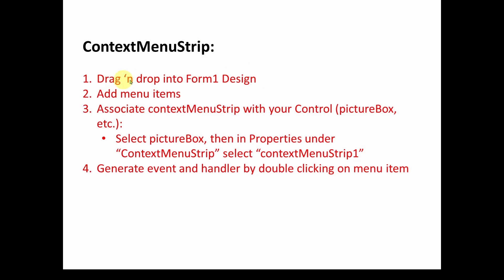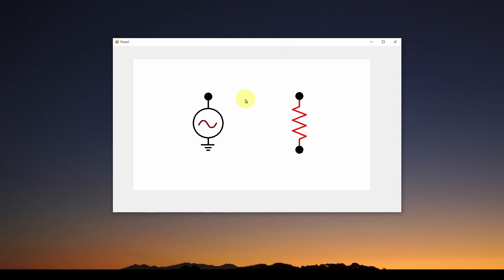The first thing is you drag and drop the context menu strip control into your Form 1 design. Keep in mind that the context menu strip is associated with a control — in our case it was associated with a picture box, but you can associate it with any control: a button, a text box, or whatever. In this case I have it associated with this picture box, and that's why I can right-click on the picture box and it brings up the menu. However, if I go outside the picture box and right-click, there's no menu. So you associate it with one or more controls.